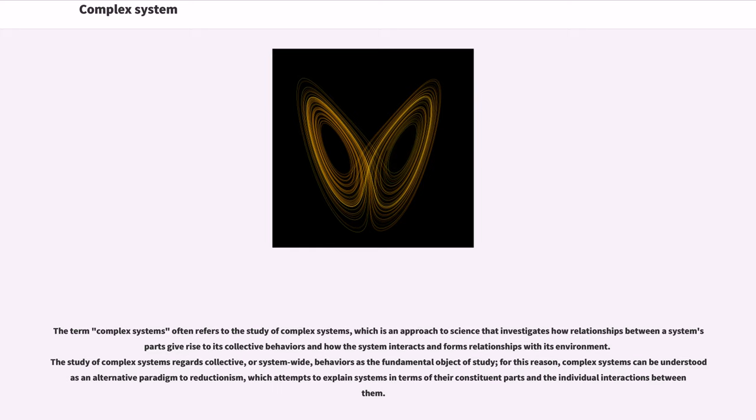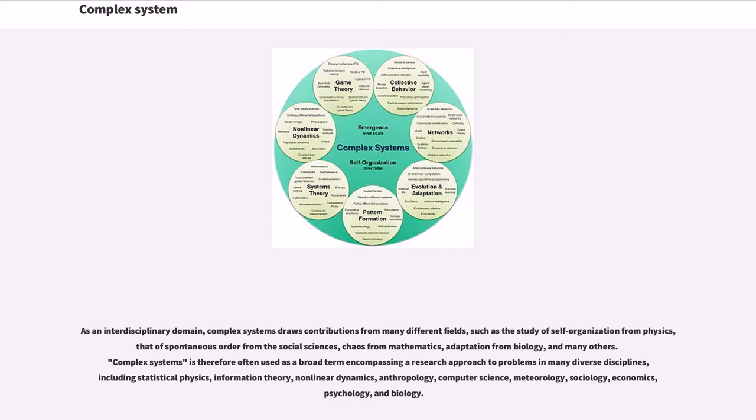The term complex systems often refers to the study of complex systems, which is an approach to science that investigates how relationships between a system's parts give rise to its collective behaviors and how the system interacts and forms relationships with its environment. The study of complex systems regards collective, or system-wide, behaviors as the fundamental object of study. For this reason, complex systems can be understood as an alternative paradigm to reductionism,